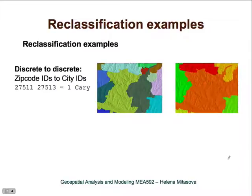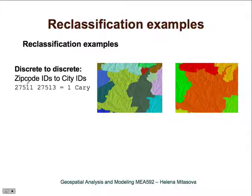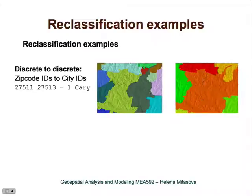When doing reclassification, we need to distinguish between discrete and continuous data. Discrete-to-discrete reclassification is relatively straightforward — we define the identification numbers or attributes that are assigned a new attribute. In this example, we are reclassifying zip codes to cities: two zip codes plus one more are reclassified as South Raleigh, and two other zip codes are reclassified as a different city.